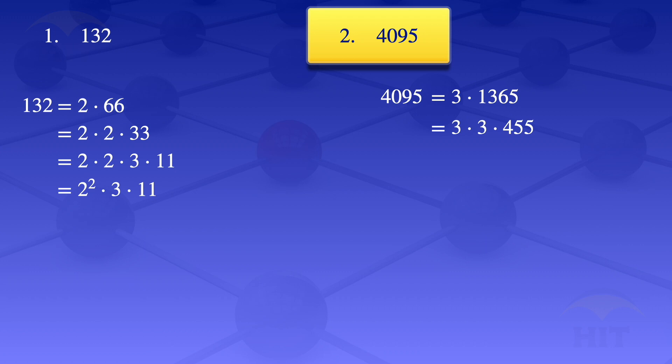We now want to find the prime factors of 455. Starting with the smallest: 2 is not a factor, 3 is not a factor, but 5 is a factor. 455 divided by 5 gives us 91. So our expression is now 3 times 3 times 5 times 91.